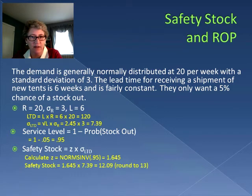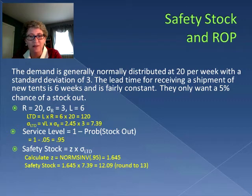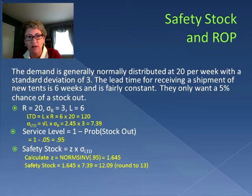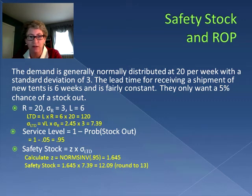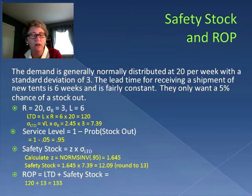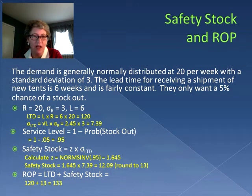From the 95 percent service level, we can calculate the safety stock. Using Excel, we determine the Z statistic associated with a 95 percent service level is 1.645. Safety stock equals Z times the standard deviation of the lead time demand: 1.645 times 7.39 equals 12.09, which we round up to 13. With lead time demand of 120 and safety stock of 13, our reorder point is 133 — so when inventory drops to 133 tents, we place our order.